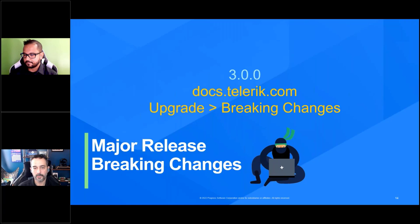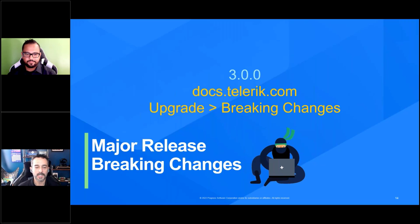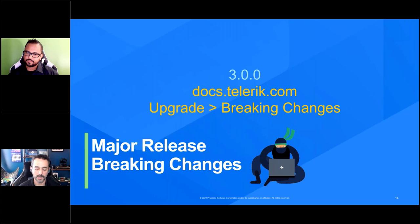I want to mention: in this release, version 3.0 of Telerik UI for Blazor, there were some breaking changes. Before you rush out and upgrade, go to docs.telerik.com, select Upgrade from the menu, and review those breaking changes — there may be things that affect your application. We do have guides on how to fix what we've changed. We have a pretty good track record of not breaking things, but at some point you have to pave the way for the future, so check those breaking changes before upgrading.